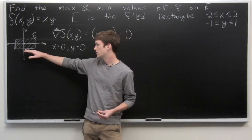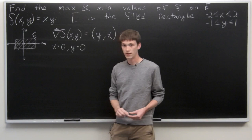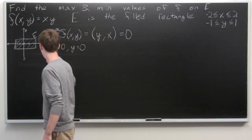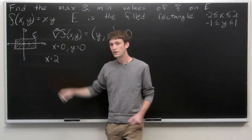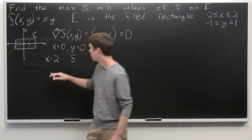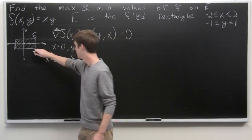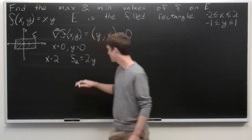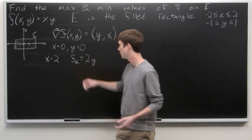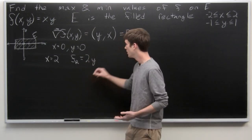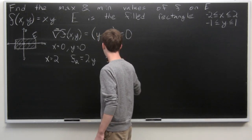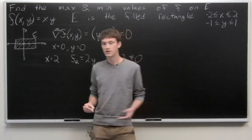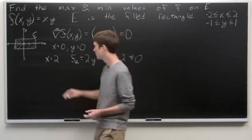Now we check the boundary. The origin is in the interior of E, so we'll include it in our points to check. When x equals 2, we get f_right equal to 2y. Taking the derivative, f_right prime equals 2, which is never equal to 0. So we have no critical points when x equals 2.